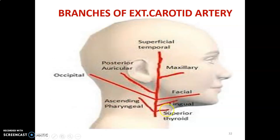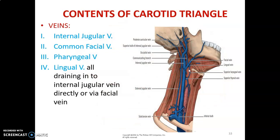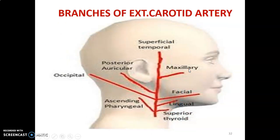For all these arteries you may be asked to write an essay. Remember how to write an essay on an artery: mention the origin, course, termination, branches, and distribution. Some arteries have multiple parts, such as the maxillary artery with three parts and approximately 15 branches — you need to know all of them and what they supply.